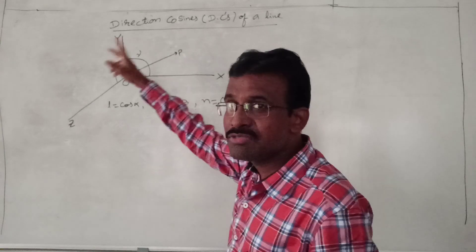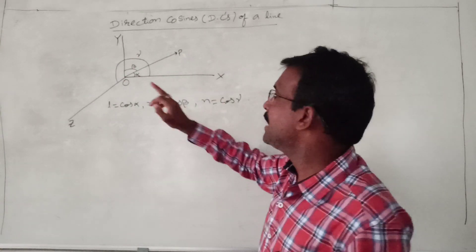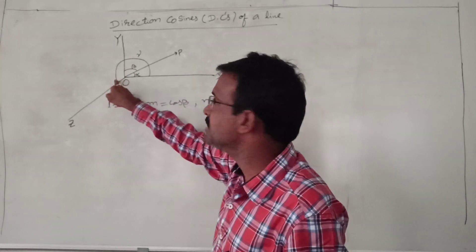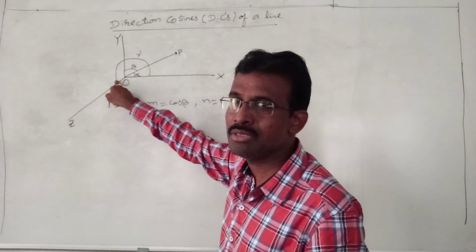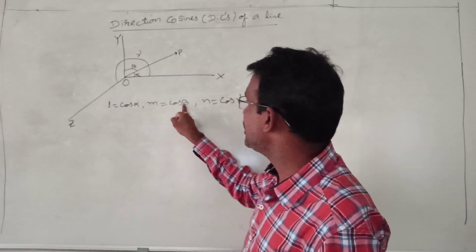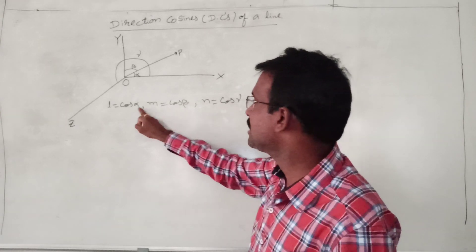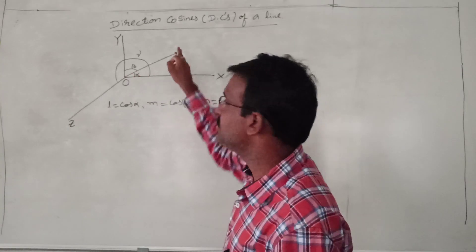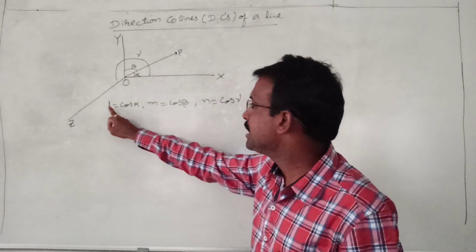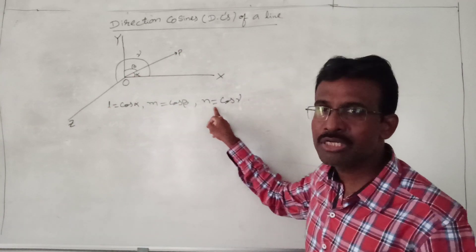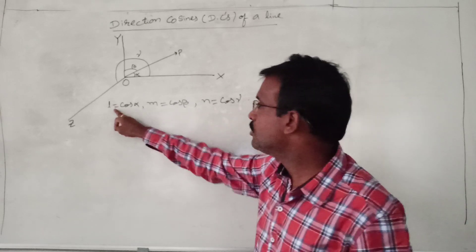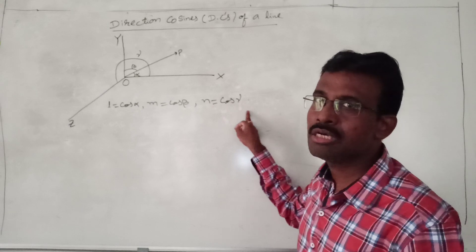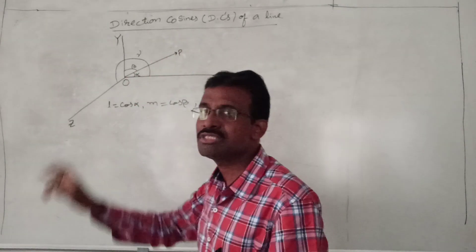Let OP be a line in the XYZ plane, making angle alpha with the X axis, beta with the Y axis, and gamma with the Z axis in the positive direction. Then cos alpha, cos beta, cos gamma are called direction cosines of this OP line, denoted by L, M, N respectively. That means L equals cos alpha, M equals cos beta, and N equals cos gamma.